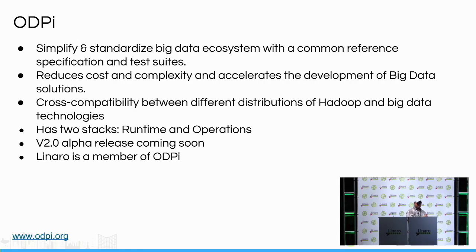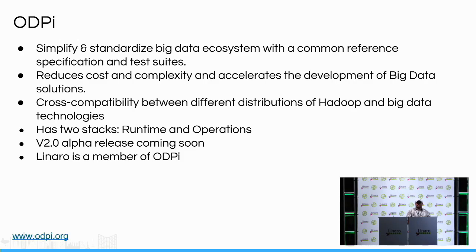One distro goes with a particular version, and the same kind of tool in a different distro could be a different version. So for an enterprise or end user, when they go with a particular distro, they get locked in. They may have problems if they want to upgrade any particular component of the big data — they get stuck with the distro-provided package. That's why ODPI is collaborating with companies like IBM, Pivotal, SAS, and Infosys — about 30 member companies working together to standardize Hadoop or any big data platform. It reduces cost and reduces complexity for the enterprise.